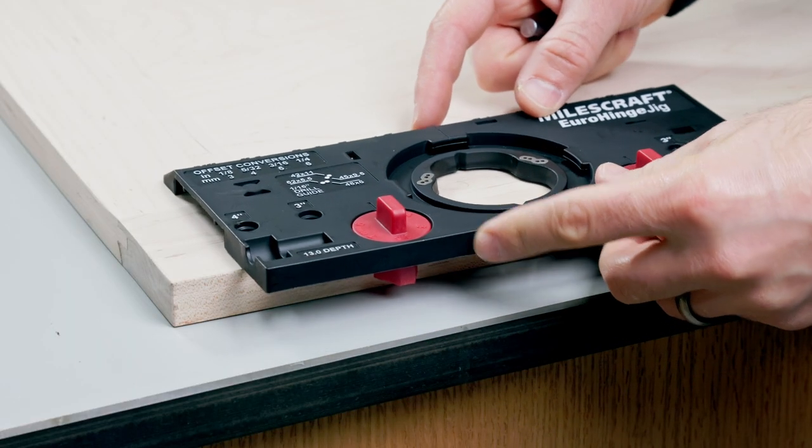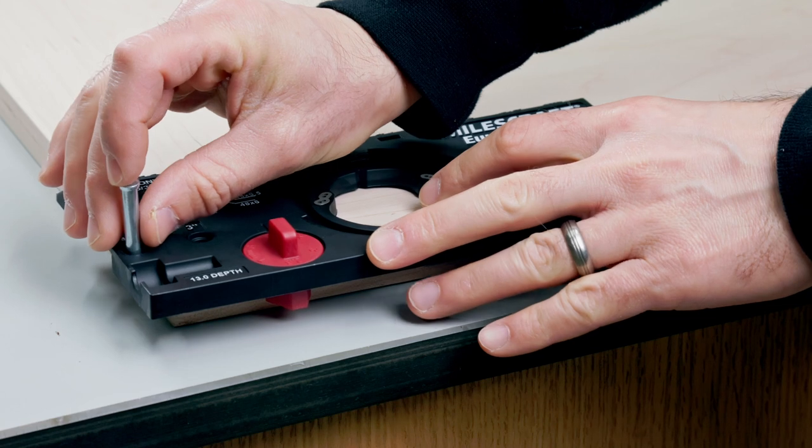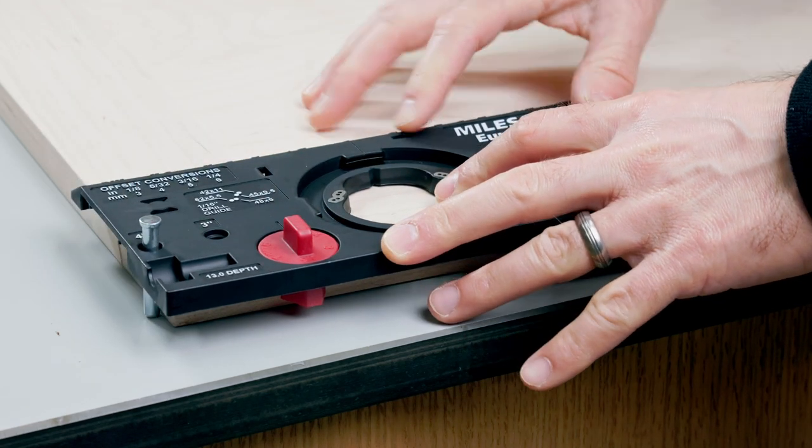And using the edge locator pin, you can make sure your hinge cups are placed the same three or four inches from the top and bottom of your door.